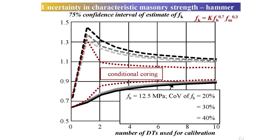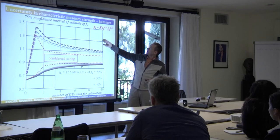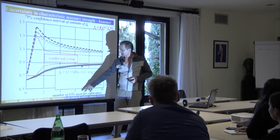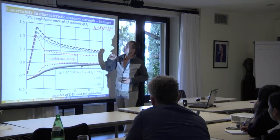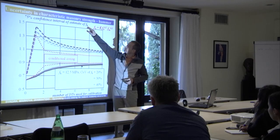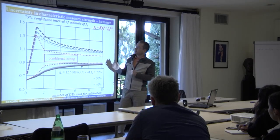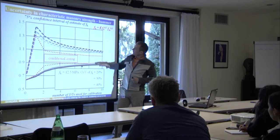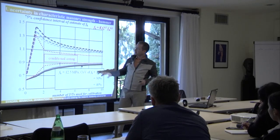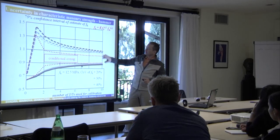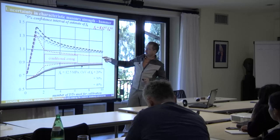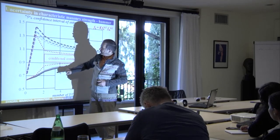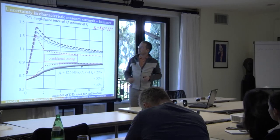Before this meeting, we quantified our uncertainty only in practical engineering terms. On the horizontal axis is the number of destructive tests used for calibration, and on the vertical axis we have 75% confidence intervals for the estimate of characteristic compressive strength of masonry — masonry units together with mortar. We see some alternatives here for different material parameters. Basically, for 10 destructive tests, our confidence interval is somewhere around plus or minus 10%. For lower numbers of tests, it is much wider.